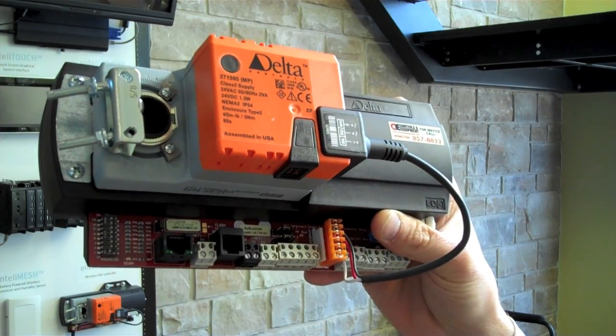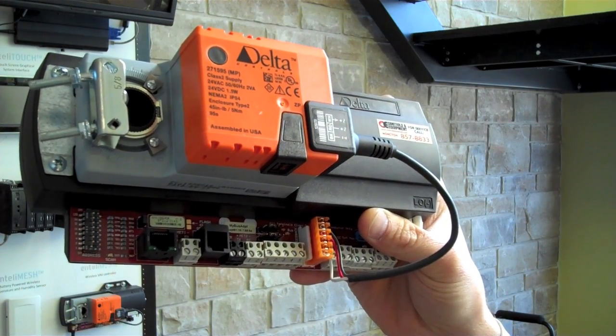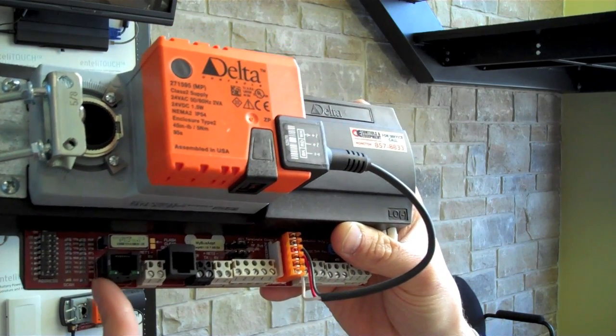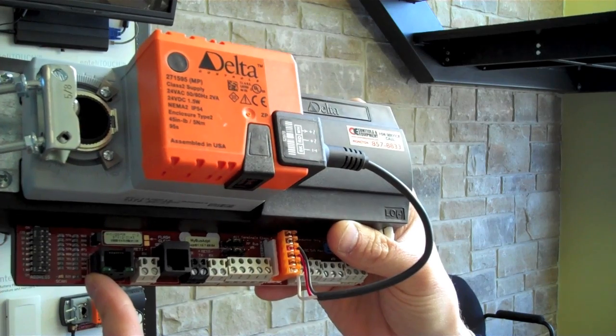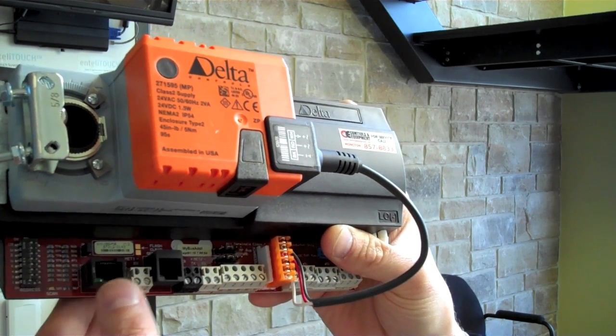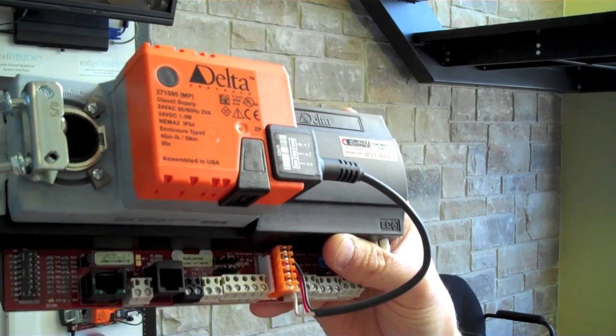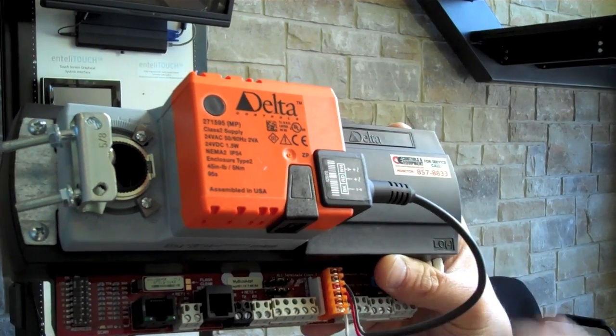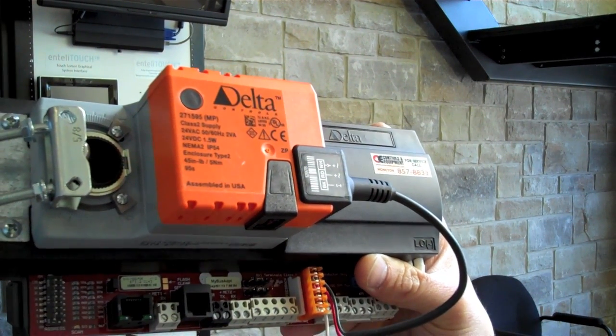So some of the specifics for this POE-powered VAV controller. Obviously, we have the Ethernet connection port, which would tell you your link status as well as data throughput. It's where the power source comes in. And there's enough power available in the Cisco switch to actually power up the VAV motor.